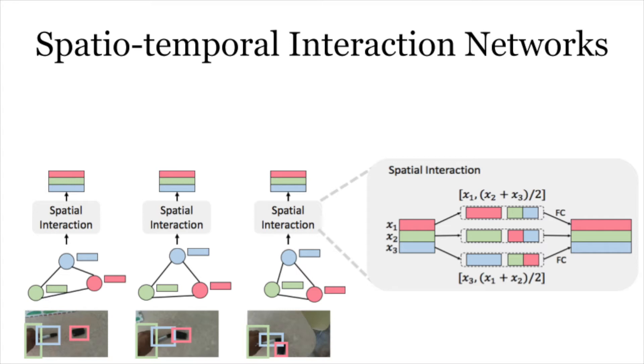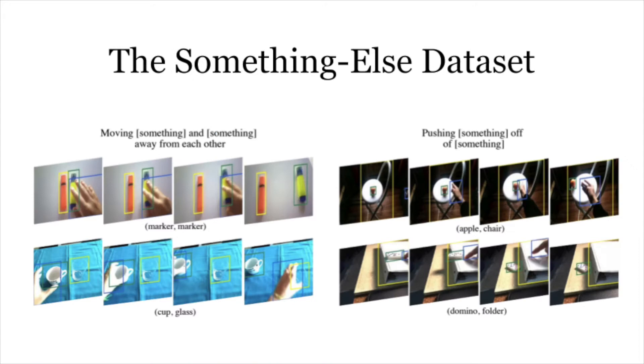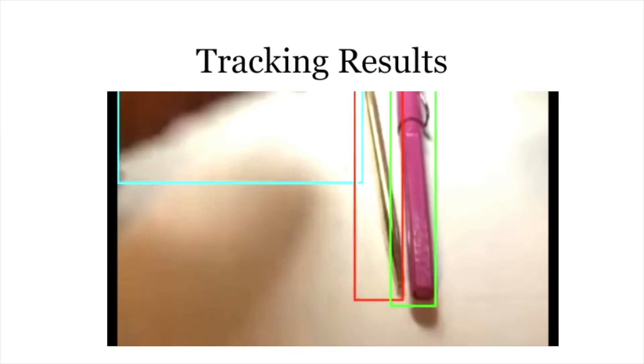The model operates on object-centric features. It performs spatial interaction reasoning for individual frames and temporal interaction reasoning across the video. To train our model, we collect dense object box annotations on the something-something dataset.